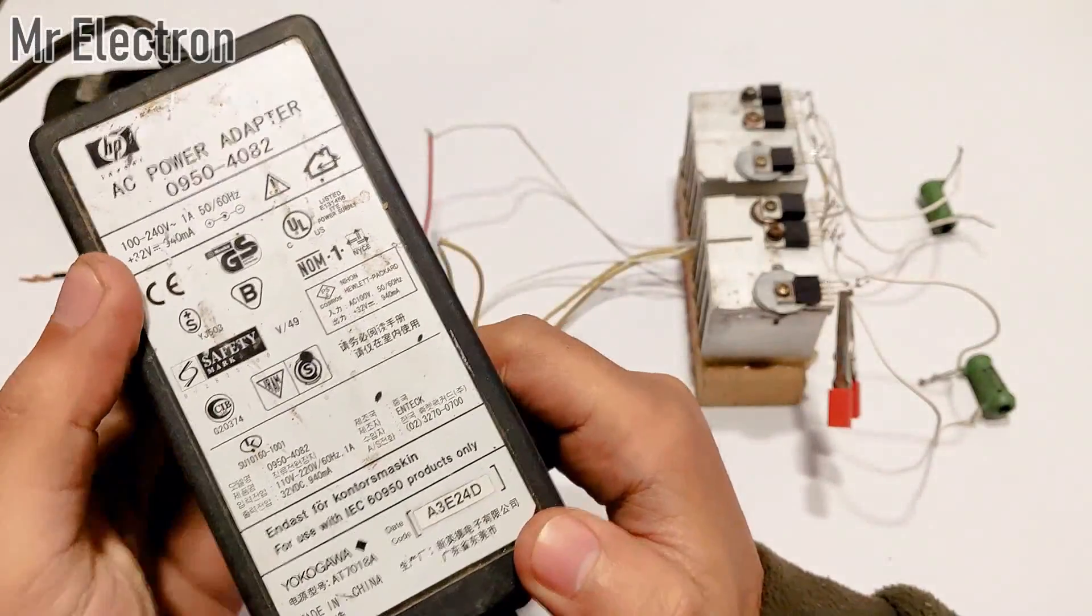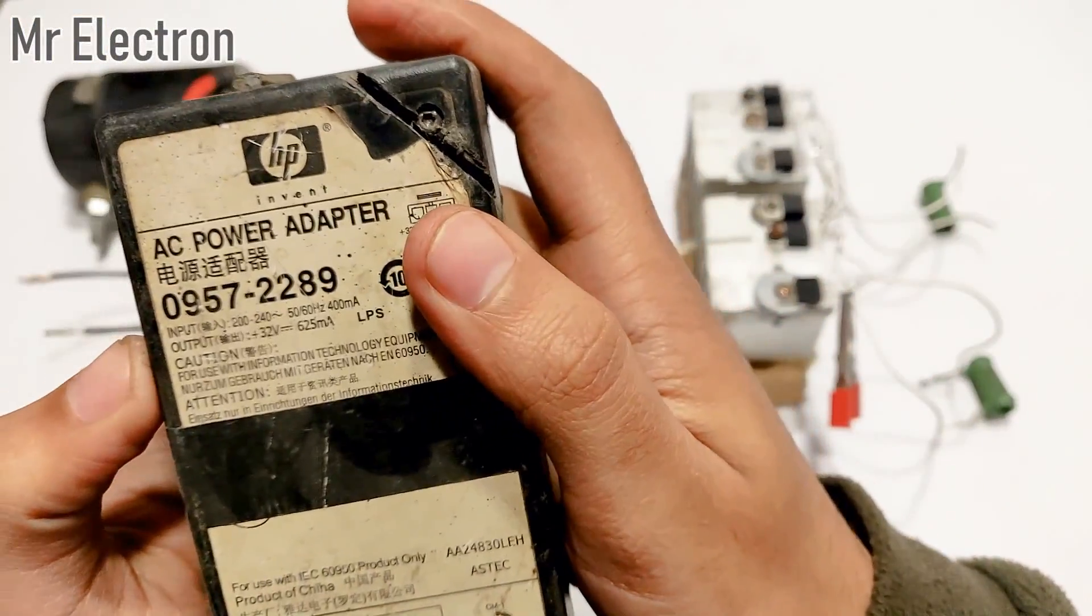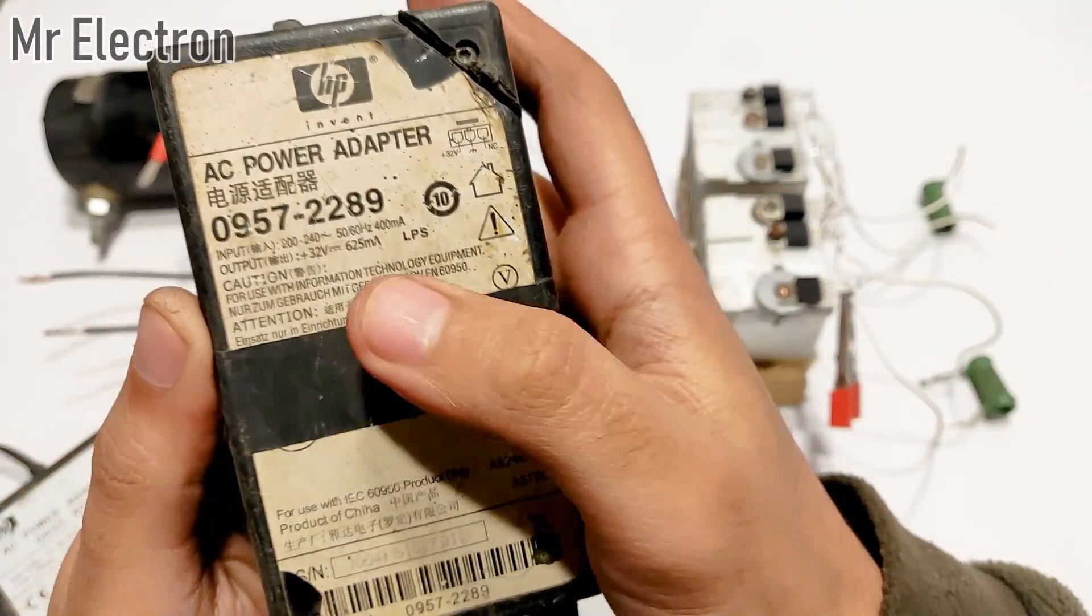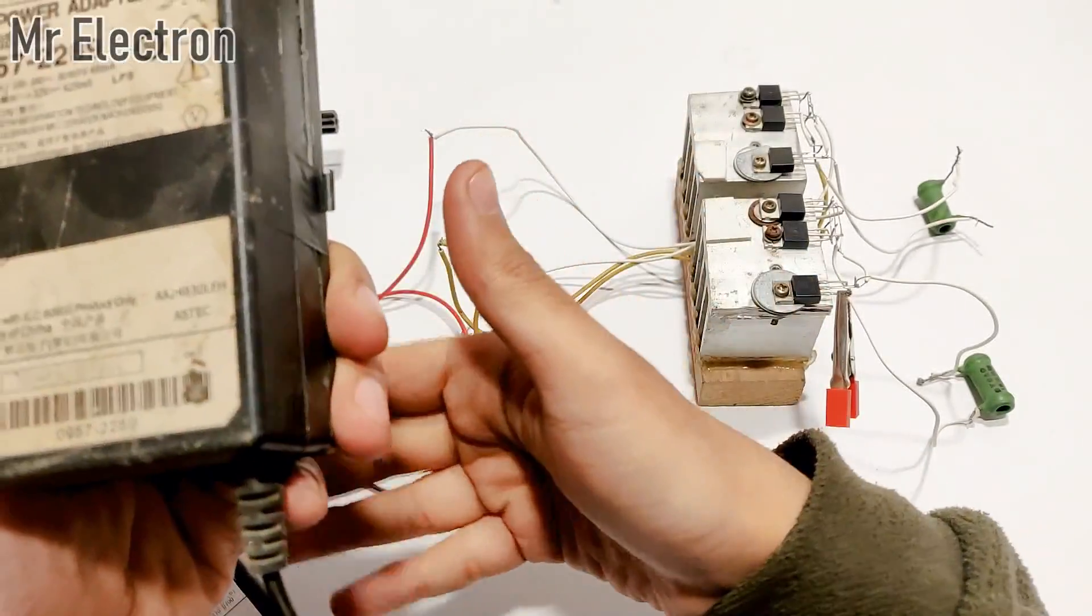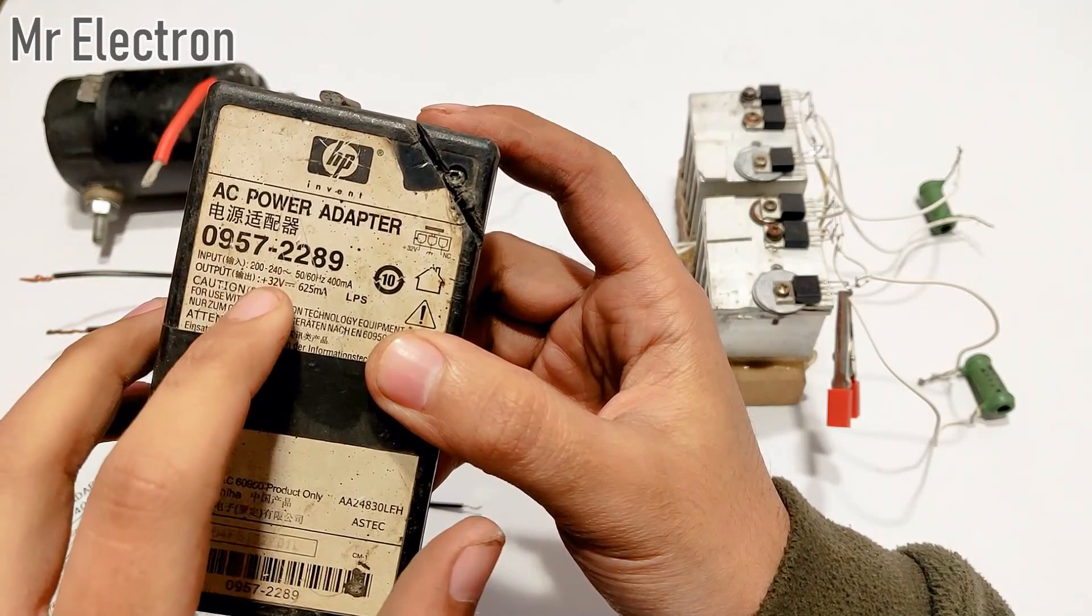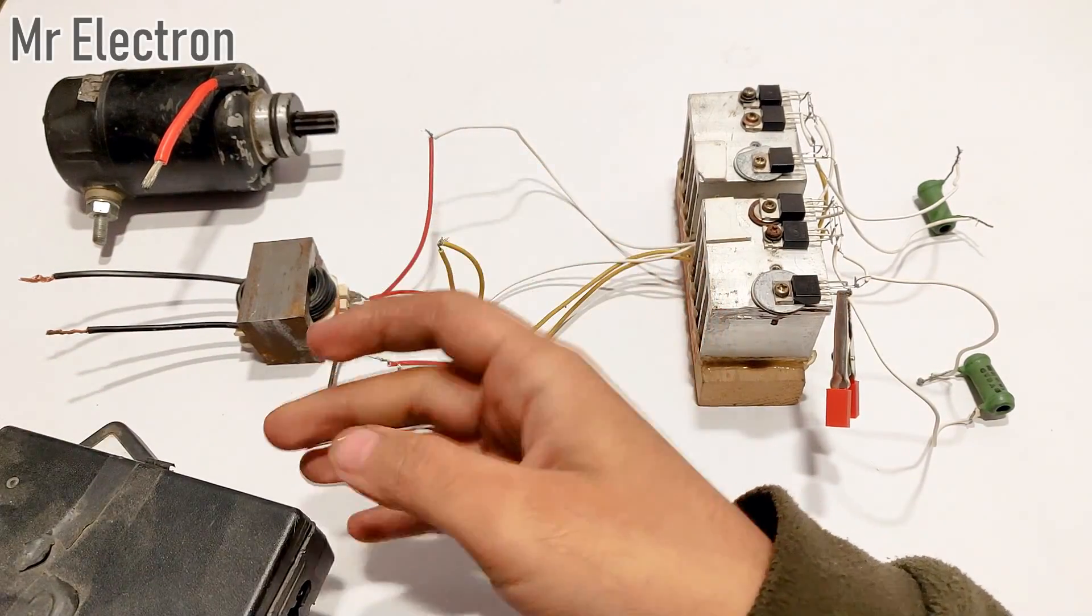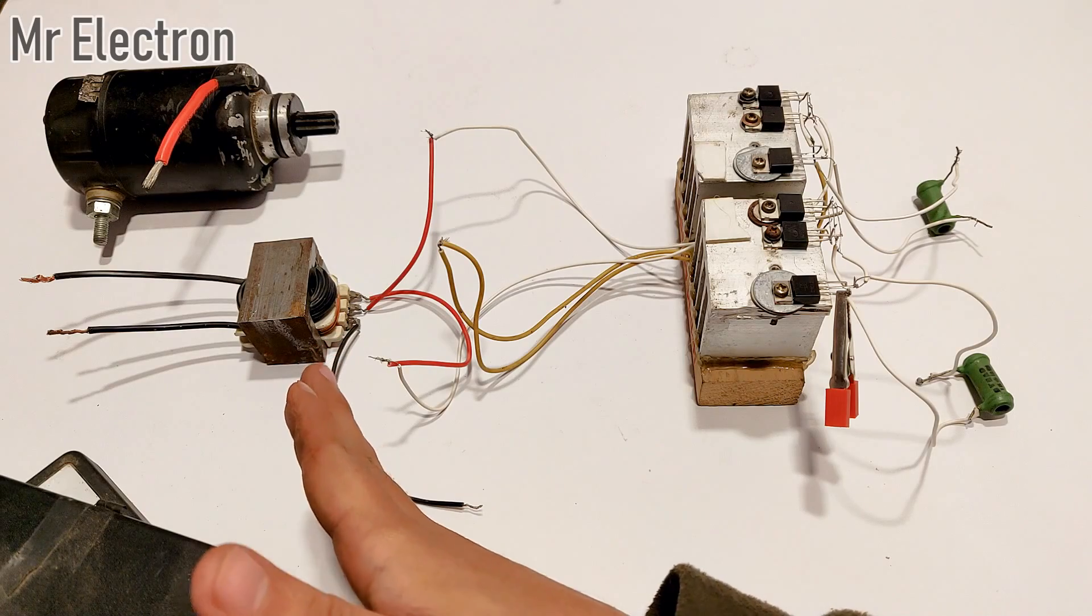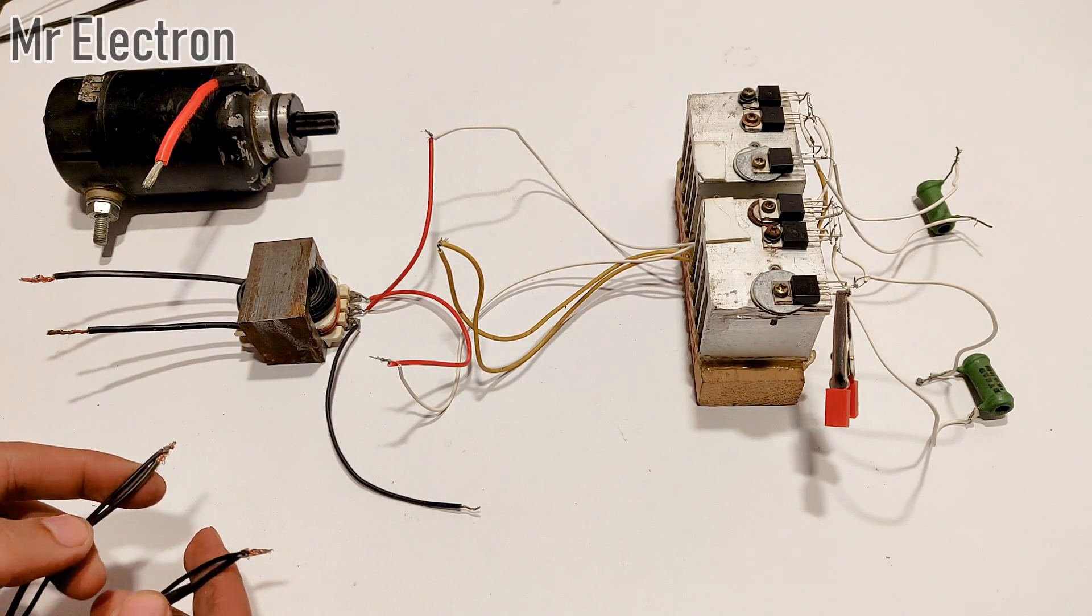I have another one at a little bit lower rating, this one from an HP printer, 32 volts at 625 milliamps. So together it is going to make around 1.5 amps and 32 volts in parallel. This is what I'm going to use to feed this circuit. These are the two wires coming out from the printer adapters.